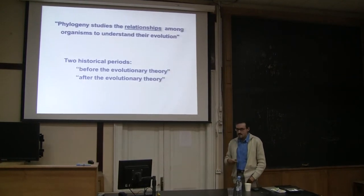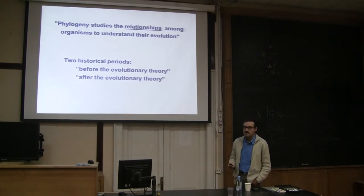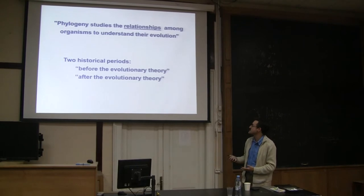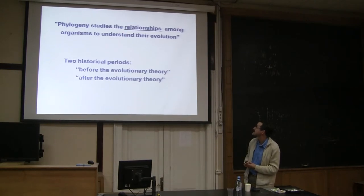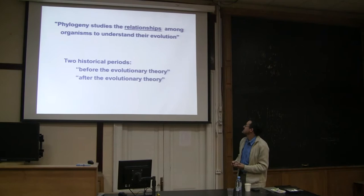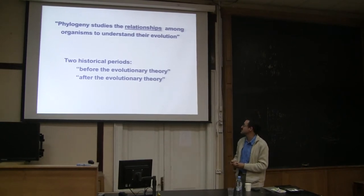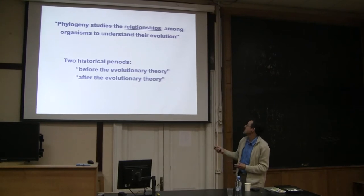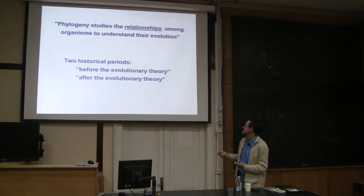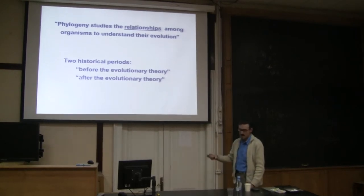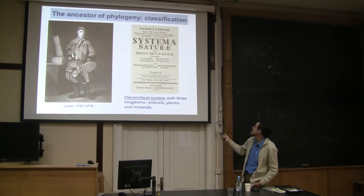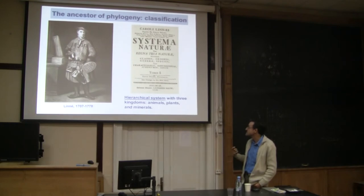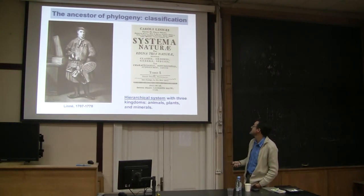The idea that there was a last common ancestor for all living beings was closely related to the emergence of the discipline that we call phylogeny, which studies the relationships among organisms to understand their evolution. We can distinguish two historical periods in the development of phylogeny: one before evolutionary theory, and one after. Phylogeny built on the previous taxonomy and classification, which was greatly developed by Linné.